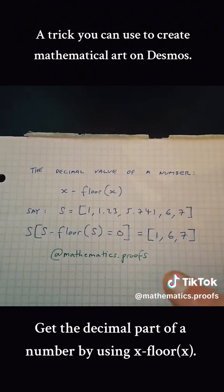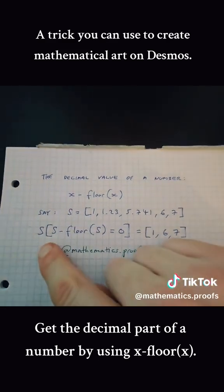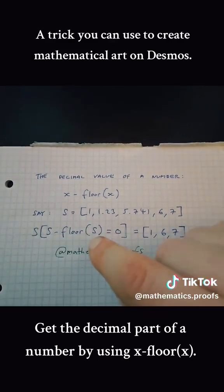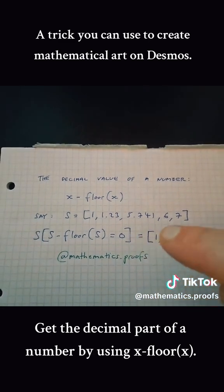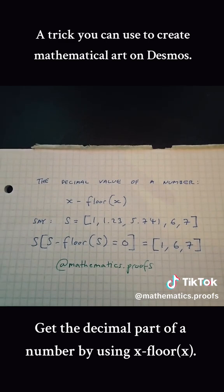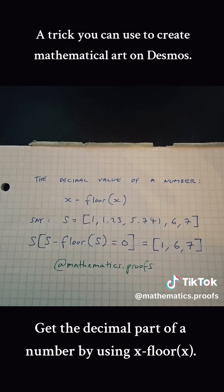If you want just the whole numbers 1, 6, and 7, what you do is write S, then you set the condition in brackets next to it: S minus floor S is equal to 0. That's because if you subtract the whole part of a whole number, you're obviously going to end up with 0.